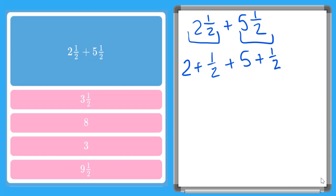And now we can rearrange this because it's addition any way we want. So I can say my whole numbers 2 plus 5 plus my fractions, a half plus a half. And now if I go ahead and add my whole numbers, 5 plus 2 will give me 7.